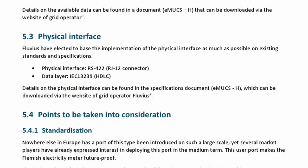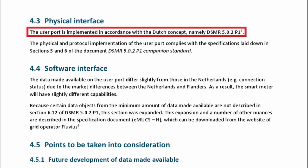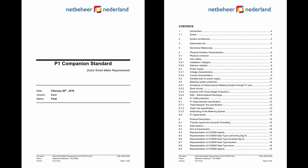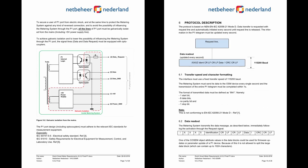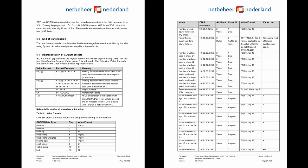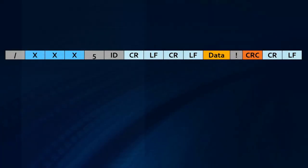Now a bit more about the data format coming over that serial connection. The data format of the P1 port, as well as the physical format discussed earlier, uses the DSMR 502 P1 standard. DSMR stands for Dutch Smart Meter Requirements, and as the name suggests, this was developed and is maintained by our northern neighbors. There is extensive documentation available for the standard and each version of it. The whole message, called a telegram or custom object, coming from the P1 port in DSMR looks like the following.